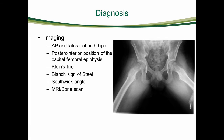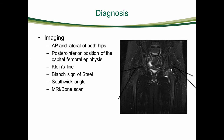The Southwick angle can be used to classify the severity of SCFE. This is measured by comparing the difference in the femoral epiphyseal shaft angle of both hips on the frog-leg lateral radiograph. The degree of SCFE can also be graded based on the percentage of slip. In cases where the diagnosis is not elucidated by clinical exam and plain radiographs, advanced imaging such as MRI and bone scan may be helpful to identify early SCFE.